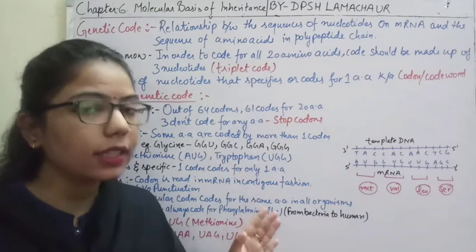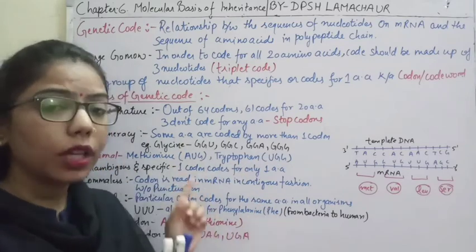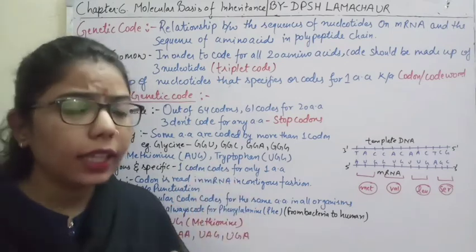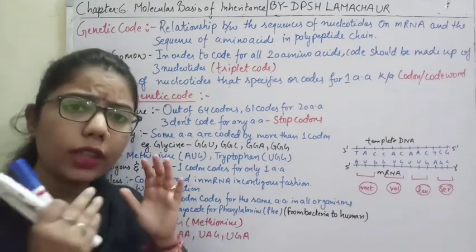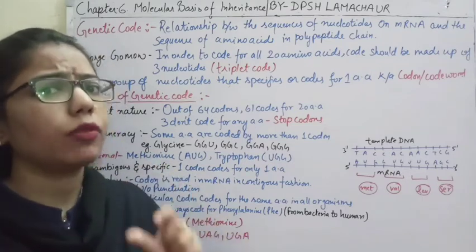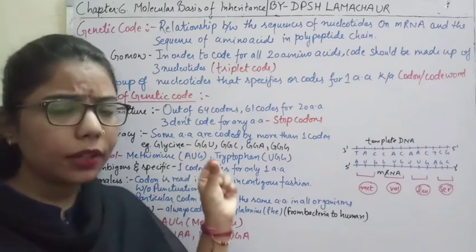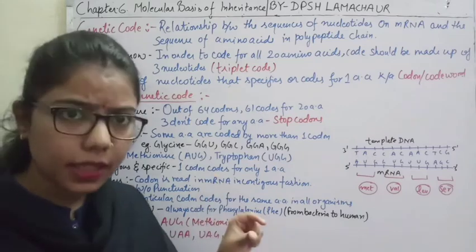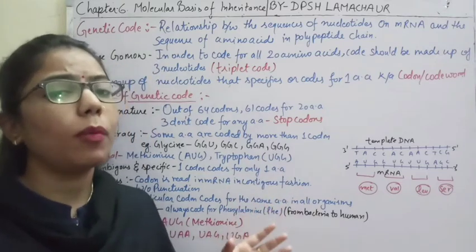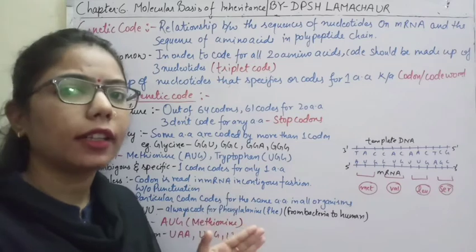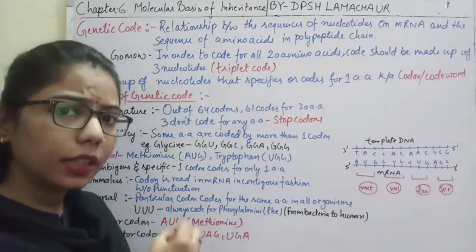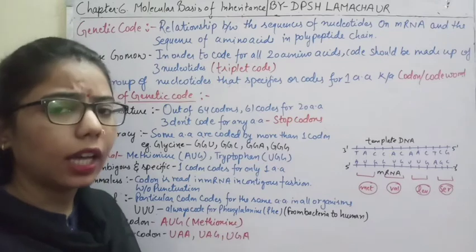Whenever we are talking about inheritance, DNA is that thing which will transfer from parents to their subsequent generation. DNA is just like a pen drive in which all the information has been stored, and this information is stored in some form. DNA is also like a pen drive and inside it, some codes are present.